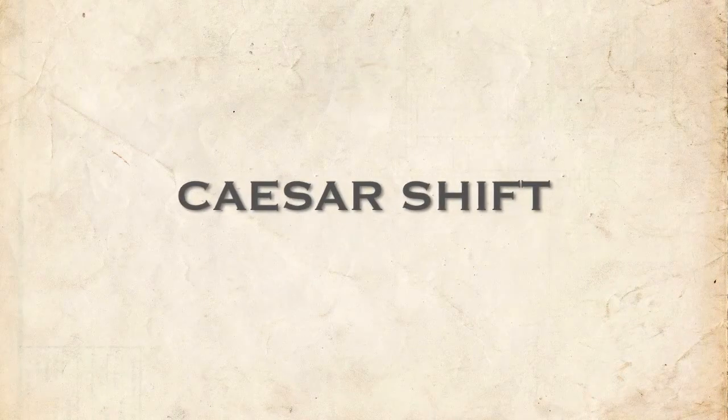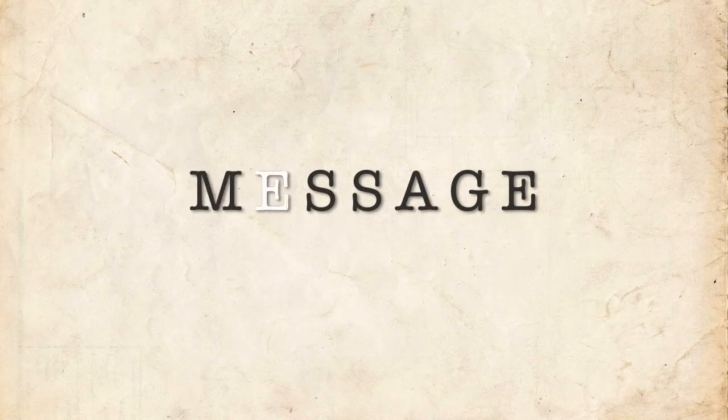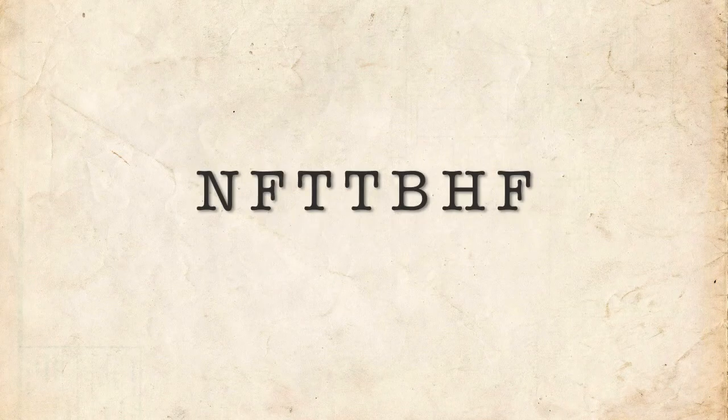All someone has to do is try every possible shift, and there's only 26 of them in the English alphabet, and they'll have your cipher solved. But this is a good way to demonstrate how a basic cipher works. It simply has rules that determine how the plaintext is converted into ciphertext.